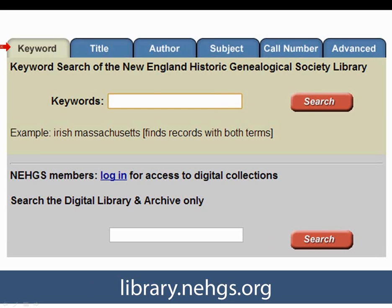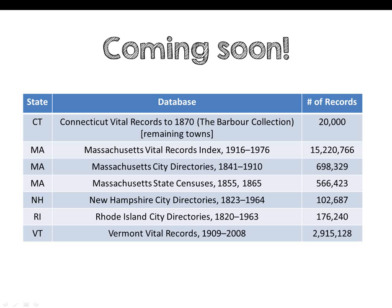Here's the sneak peek I promised — what's coming soon to AmericanAncestors.org. We have Connecticut Vital Records to 1870, the Barber Collection, finishing with all 136 volumes by the end of the year. We also have the Massachusetts Vital Record Index, 1916 to 1976 — Dr. Neal Todd's hard work will now be digital to aid in accessing records not yet released by the Commonwealth. Coming soon: Massachusetts City Directories 1841 to 1910, Massachusetts State Censuses 1855 and 1865, New Hampshire City Directories 1823 to 1964, Rhode Island City Directories 1820 to 1963, and Vermont Vital Records 1909 to 2008. Thank you for attending this webinar and hope to see you at NEHGS or in an upcoming webinar.